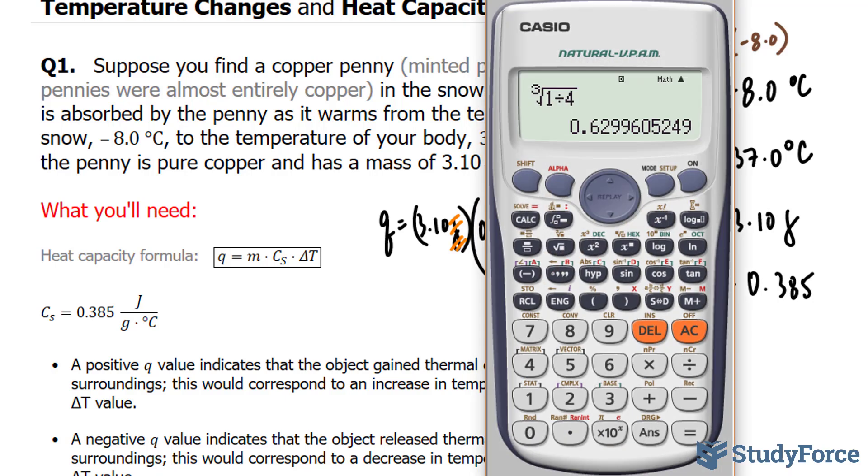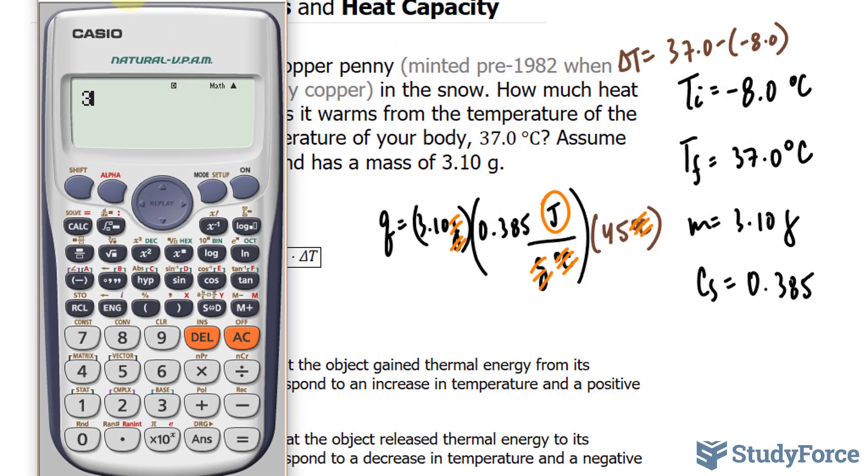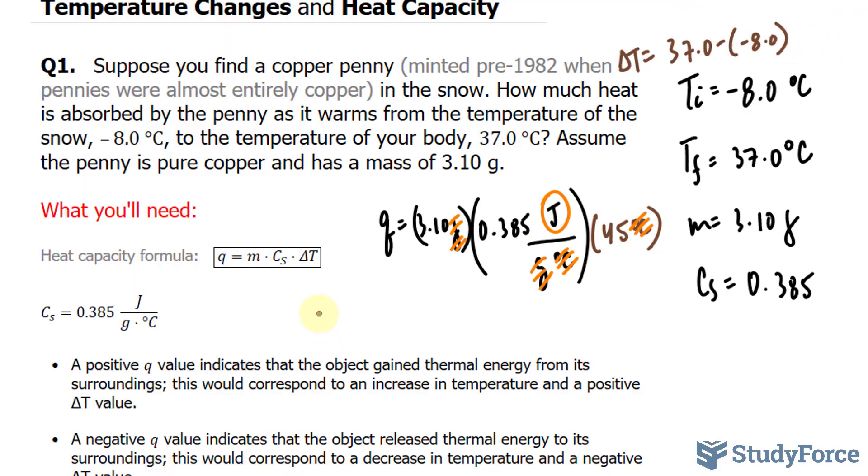Using our calculator, we have 3.10 times this number, 0.385, and that's being multiplied to 45. We end up with a positive Q value of 53.7. Q equals 53.7 joules.